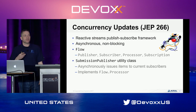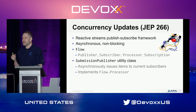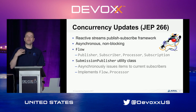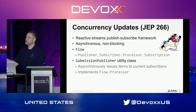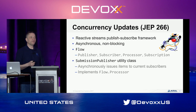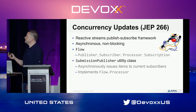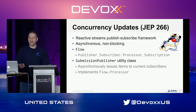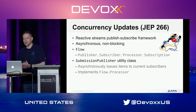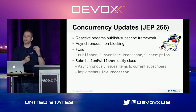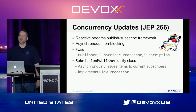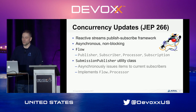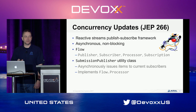Concurrency updates include a more reactive way of doing streams — a publish-subscribe framework. This provides asynchronous, non-blocking support similar to RxJava and other reactive frameworks. It's based on the idea of a Flow class, with publishers, subscribers, processors, and a subscription. There's a SubmissionPublisher utility class where you can have a subscriber to messages from a publisher, with messages passed asynchronously to the current subscribers. You implement the Flow.Processor interface — a clean API for reactive programming.